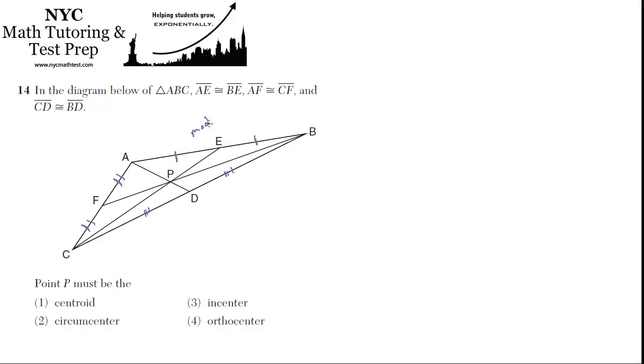And that's not just the case for CE, it's also the case for AD, because the same thing is true on all sides. So AD is also a median, and BF is a median. So we've drawn three medians, and what happens when you draw three medians and they intersect at a point, point P? That is called the centroid, so the best choice is one.